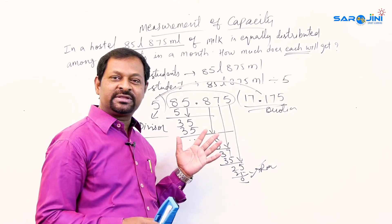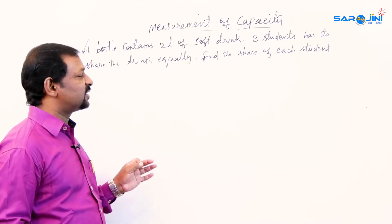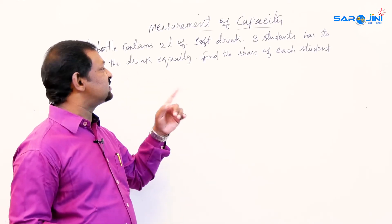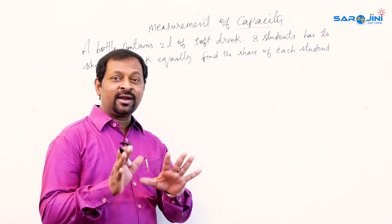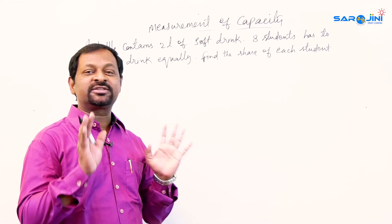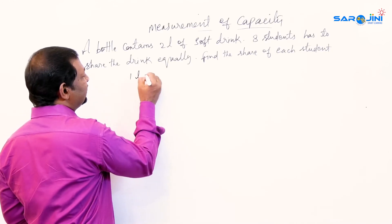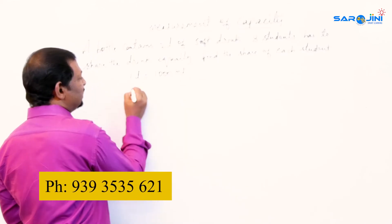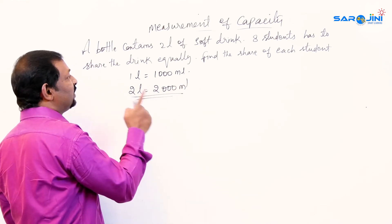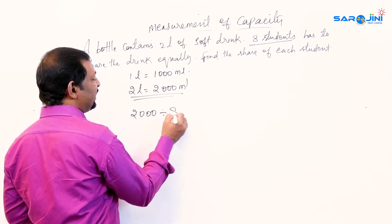Here is one more question. A bottle contains 2 liters of soft drink, and 8 students have to share it equally. Find the share of each student. Now 2 divided by 8 is not straightforward, so we convert: 1 liter equals 1000 milliliters, so 2 liters equals 2000 milliliters. We divide 2000 milliliters equally among 8 students.